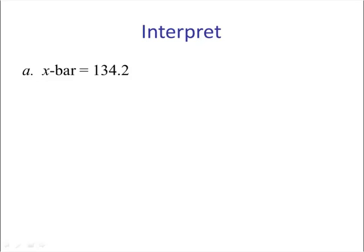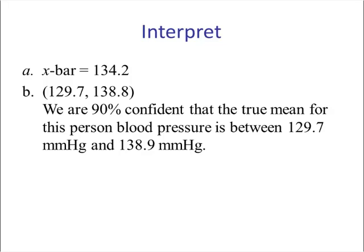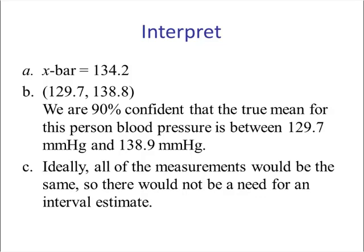The best point estimate is X-bar: 134.2. Our 90% confidence interval is 129.7 to 138.8. We're 90% confident that the true population mean for this person's blood pressure is between 129.7 and 138.9 millimeters of mercury. Ideally, all the measurements would be the same, so there'd be no need for a confidence interval — but we can expect natural variation when different people are measuring blood pressure.